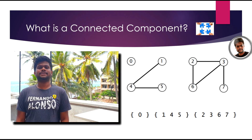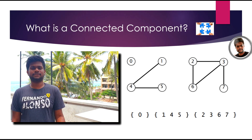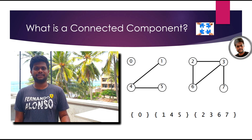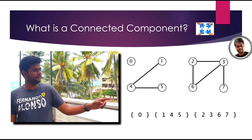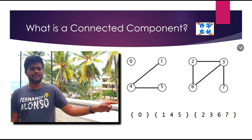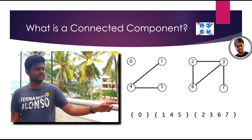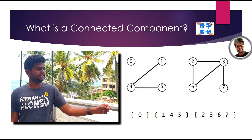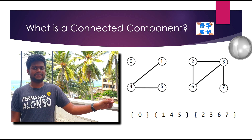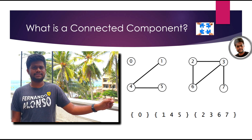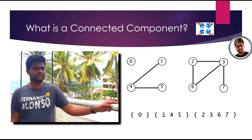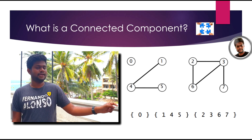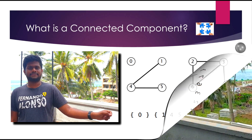What is a connected component? The maximum set of objects which are mutually connected are connected components. In this example, {1, 0, 5} is a connected component. Similarly, {2, 3, 6, 7} is a connected component. A standalone node is also considered as a connected component. Connected components can be represented using query braces.